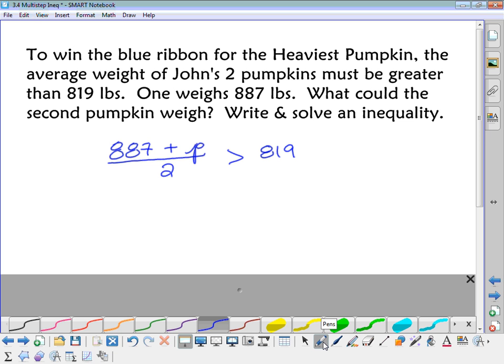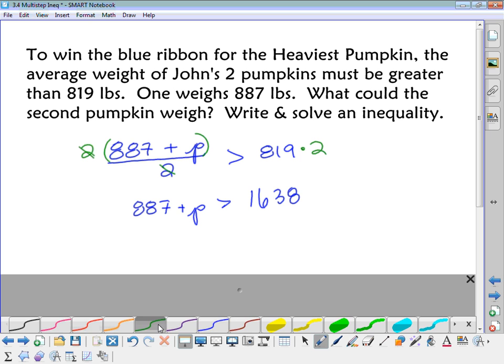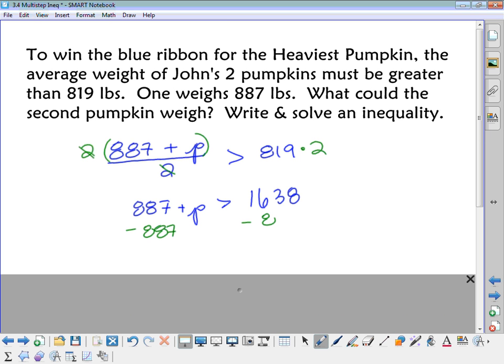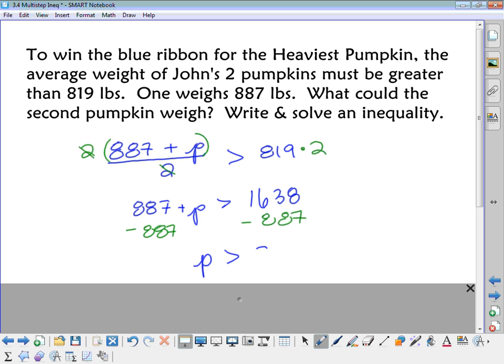And then, to solve it, now I've got a group that's being divided by 2. So what's the opposite of division? Opposite is multiplication. So we multiply both sides by 2. And that way, the fraction goes away on the left. So now I've got 887 plus P is greater than 1638. That's 2 times 819, right? All right, now to get the P alone, only one thing left to do. Subtract 887. And so when I subtract, I get the P would be greater than 751. And that would be pounds. Okay, so as long as his other pumpkin is more than 751 pounds, then he'll win the blue ribbon.